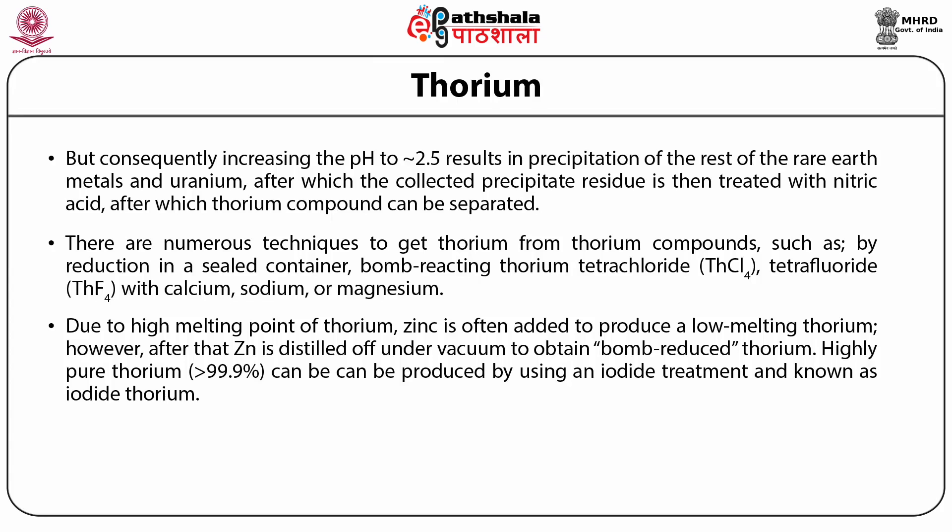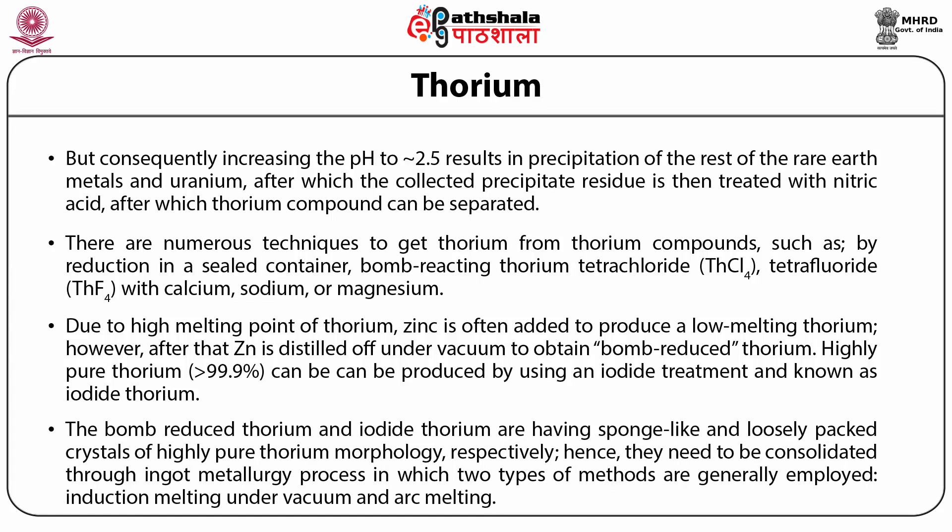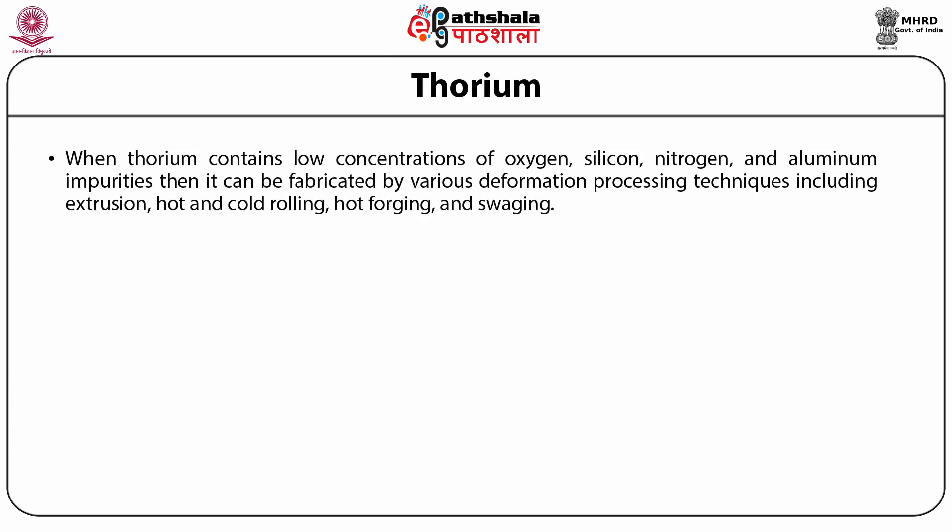Highly pure thorium can be produced using an iodide treatment, known as iodide thorium. Both bomb-reduced thorium and iodide thorium have sponge-like and loosely packed crystal morphologies respectively. Hence, they need to be consolidated through ingot metallurgy, employing methods including melting under vacuum and arc melting. When thorium contains low concentrations of oxygen, silicon, nitrogen and aluminium impurities, it can be fabricated by various deformation processing techniques.